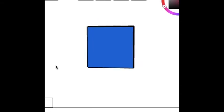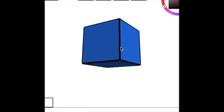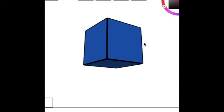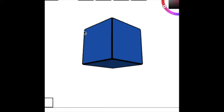There are six faces on the cube, and there's one, two, three, four, five, six, seven, eight vertices. Eight points, eight corners.